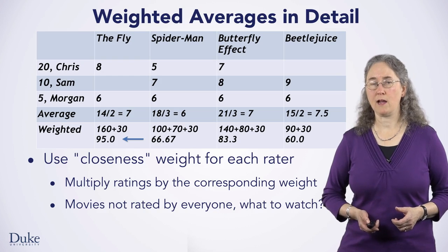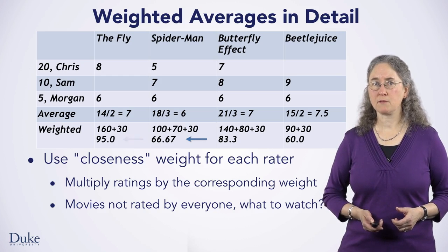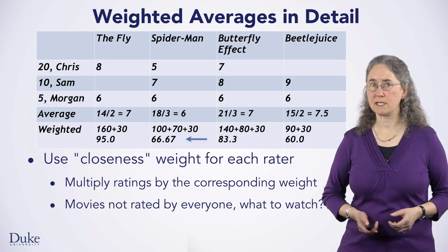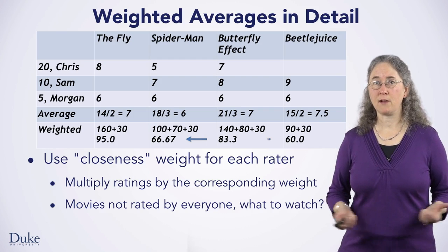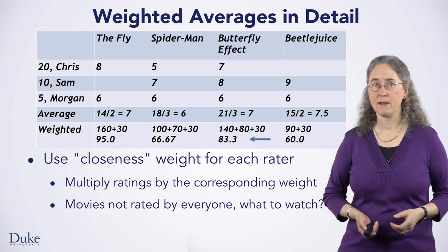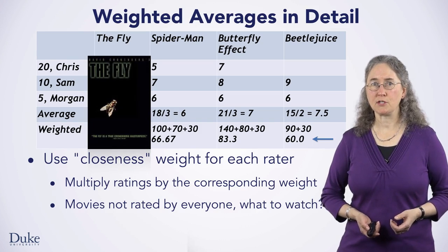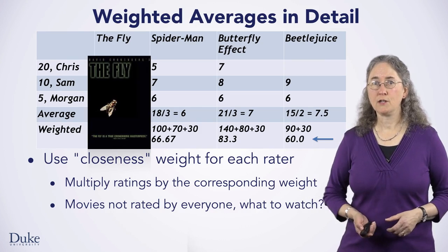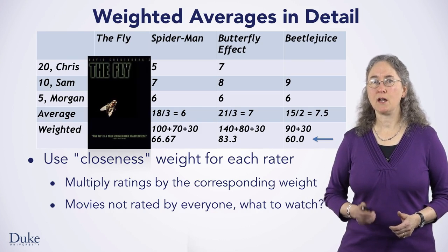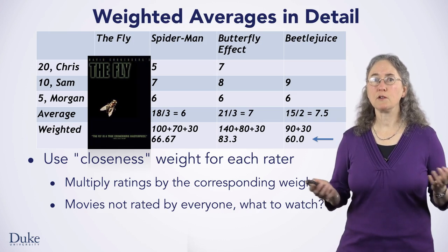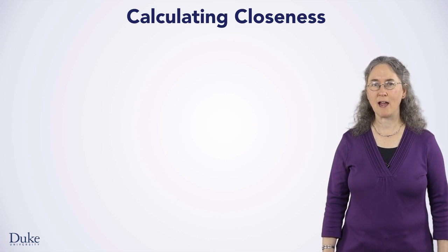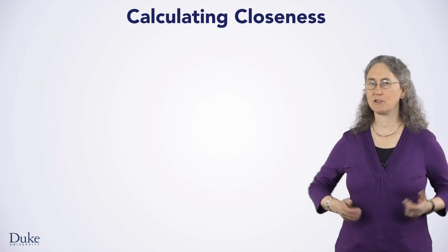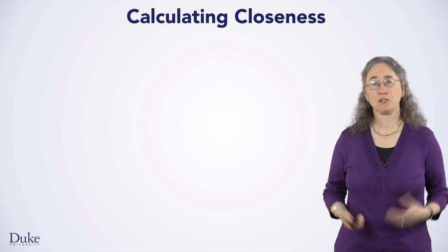That's different from the unweighted average of 7. Spider-Man's weighted average is 66.67, The Butterfly Effect has a weighted average of 83.3, and Beetlejuice has a weighted average of 60. Given these weighted averages, it looks like we should watch The Fly. Note that the best movie using an unweighted average is Beetlejuice, and this is the lowest rated movie using weighted averages. To calculate this weighted average, we need to calculate a weight — how close a rater is to me, or to some particular rater.